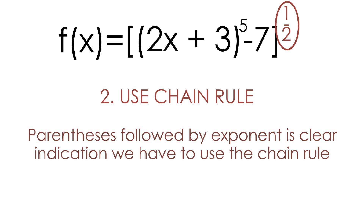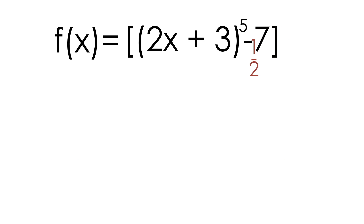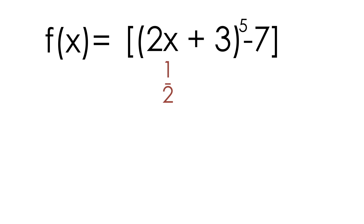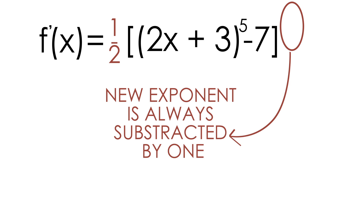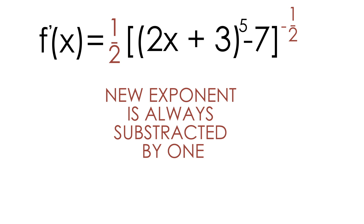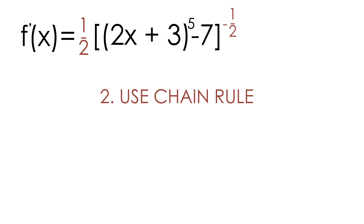When taking a derivative, we always have to take our exponent and multiply it in the front. So let's take our exponent of one-half and multiply it in front of the function. Our new exponent is always subtracted by one, so one-half minus one is equal to negative one-half. Now we are ready to use the chain rule.